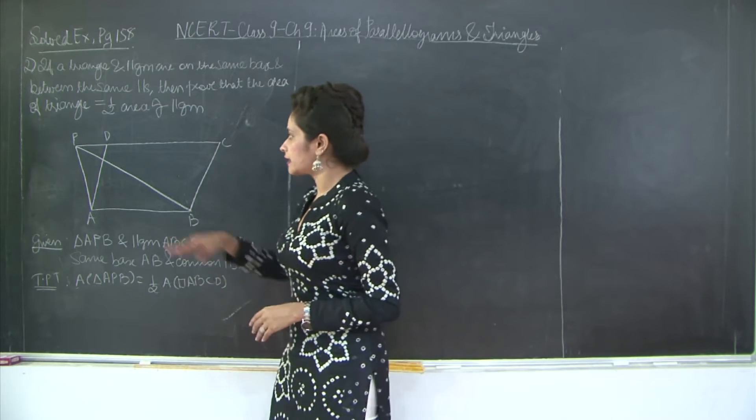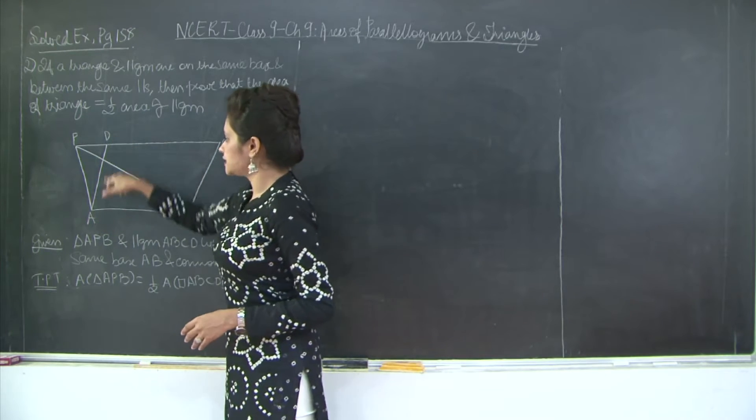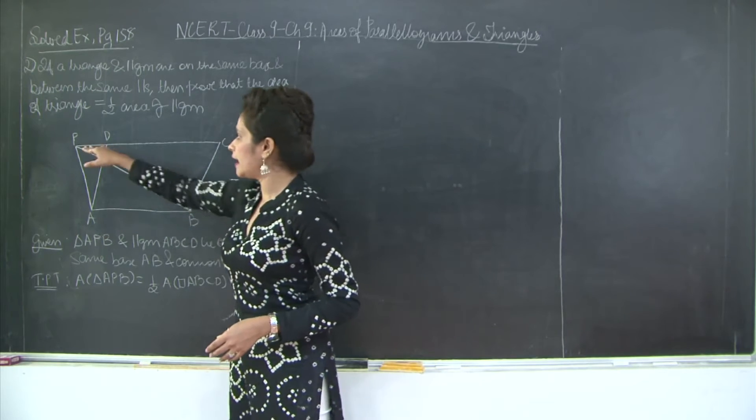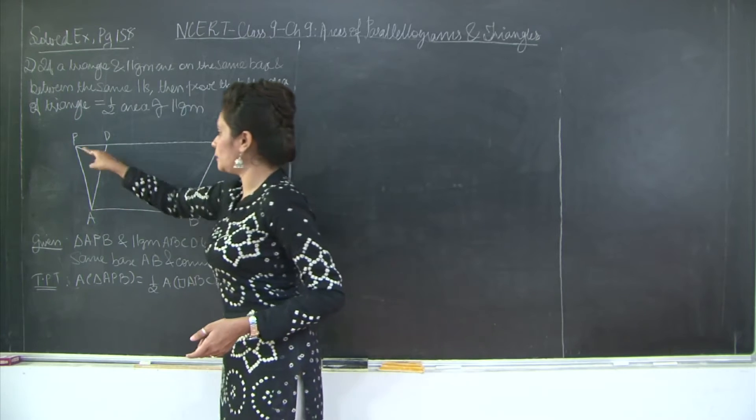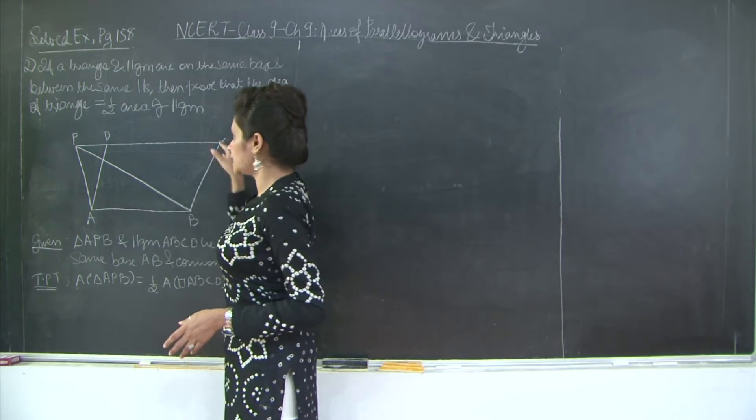We have drawn triangle APB and quadrilateral ABCD on the same base AB and between the common parallels AB and PC. We need to prove that area of triangle APB is equal to half the area of quadrilateral ABCD.